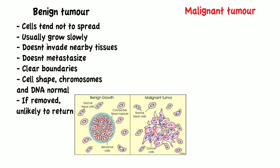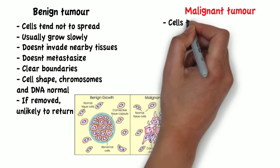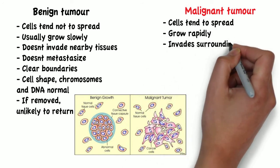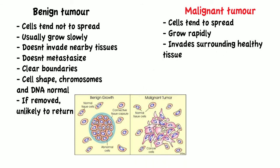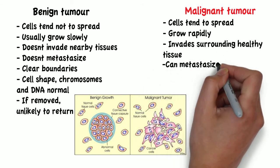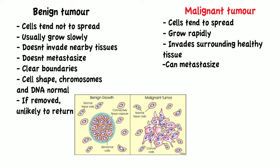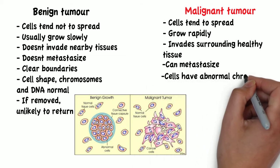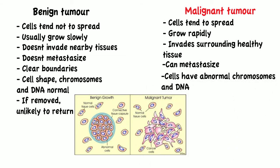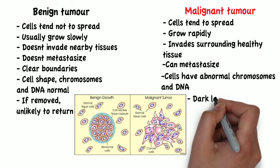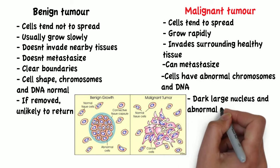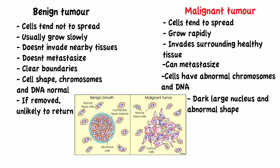In malignant tumors or cancers, cells tend to spread and grow rapidly, often invading surrounding healthy tissue, and they can metastasize through the bloodstream, the lymphatic system, or through direct contact with nearby tissue. Under a microscope, cells have abnormal chromosomes and DNA, and these cells often present with a dark, large nucleus and may have an abnormal shape. Once removed, cancers may reappear even in areas other than the original site.